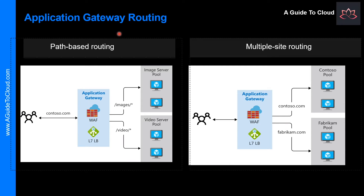Let's understand the Application Gateway routing. Clients send requests to your web application to the IP address or DNS name of the gateway. The gateway then routes these requests to the selected web server in the backend pool, using a set of rules configured for the gateway to determine where the request should go.